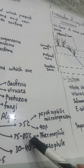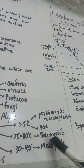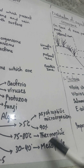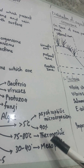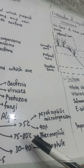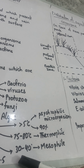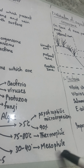Some organisms need 75 to 80 degrees centigrade and are called thermophiles. Some are hyperthermophilic, needing temperatures above 80 degrees centigrade. Others need a temperature of 30 to 40 degrees centigrade and are called mesophilic microorganisms.